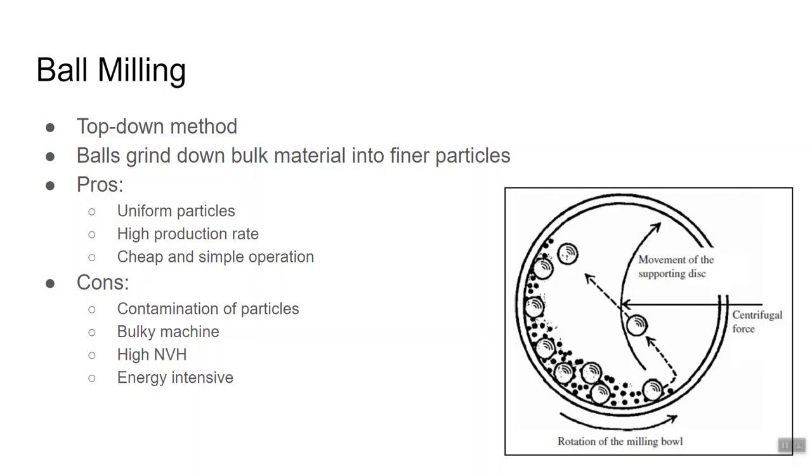There is also another type of ball milling called high-energy ball milling. In this setup, you have several rotating balls attached to a rotating turntable. Now the rotation of the balls is in the opposite direction of the turntable, and this creates much higher forces due to centrifugal force compared to just gravity alone. So the advantages of ball milling are its high production rate, its ability to create uniform particles, and it's a cheap and simple operation.